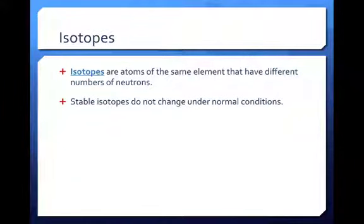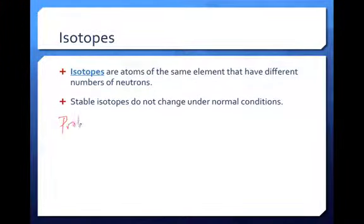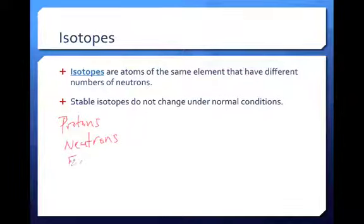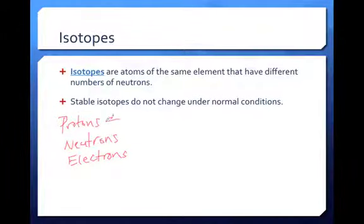We also need to understand the concept of isotopes, which are atoms of the same element that have a different number of neutrons. Atoms are made up of three subatomic particles: protons, neutrons, and electrons. What element you have is dependent upon the number of protons — that determines what element you have.